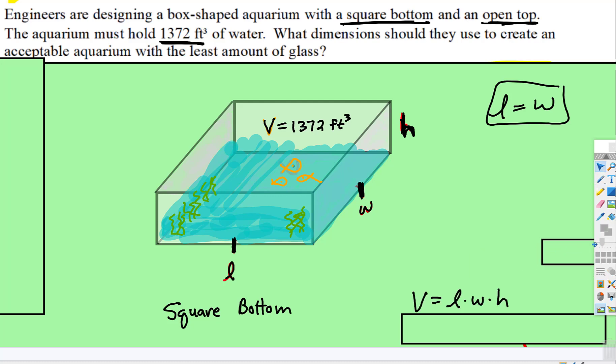It does give the volume 1,372 cubic feet. The volume formula is length times width times height. For this volume formula, since length and width equal each other, we could say volume equals length times length times height, which is length squared times height.